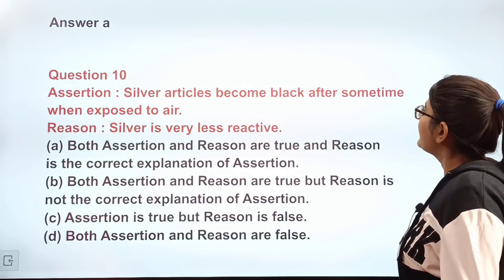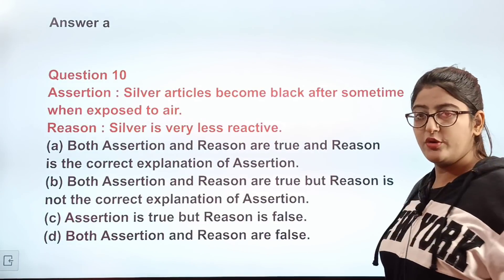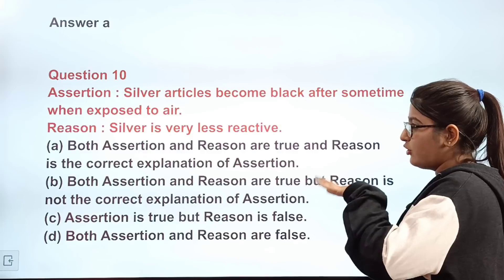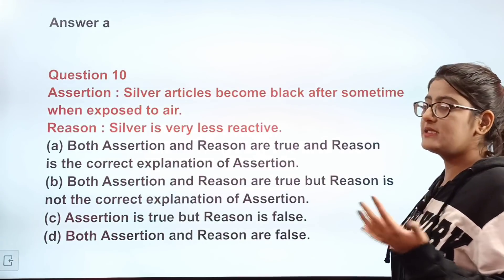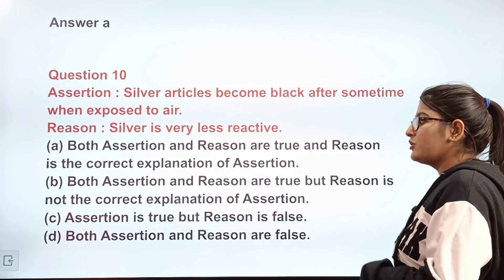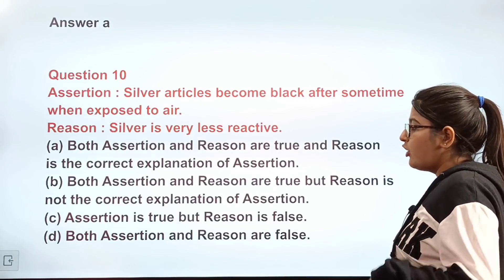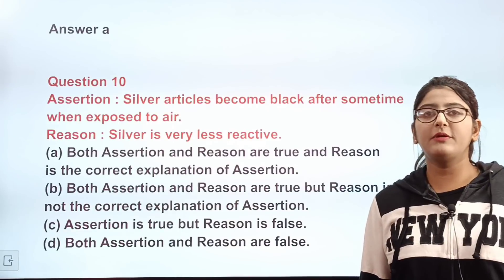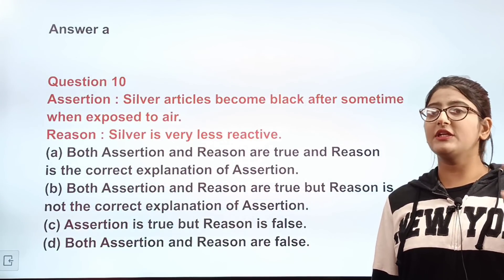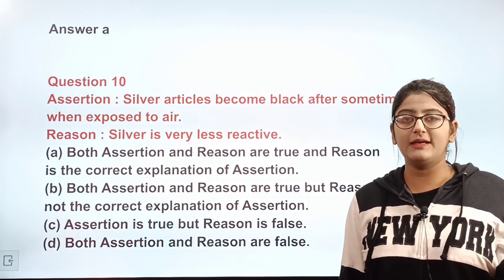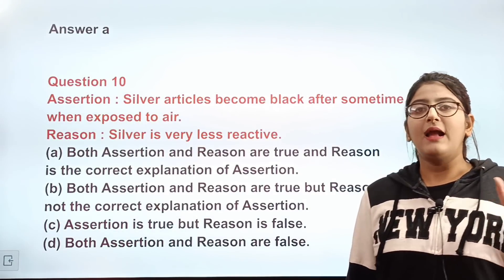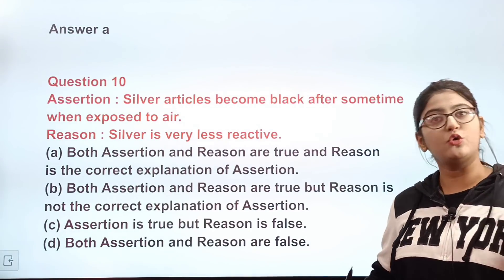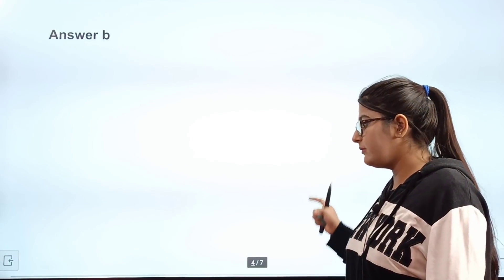Question number ten is another assertion-reason question. Assertion: silver articles become black after some time when exposed to air. Reason: silver is very less reactive. Both are true — silver does tarnish in air and it is less reactive — but the reason does not correctly explain the assertion (tarnishing is due to reaction with sulfur compounds, not just low reactivity). The correct answer is B — both assertion and reason are true but reason is not the correct explanation.